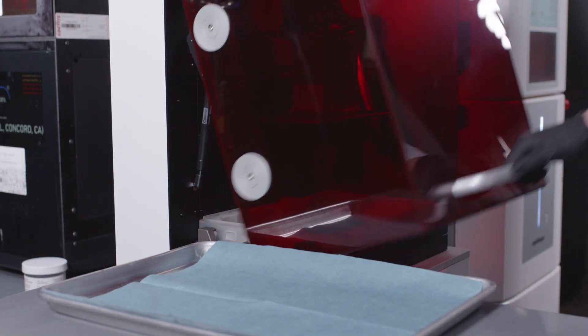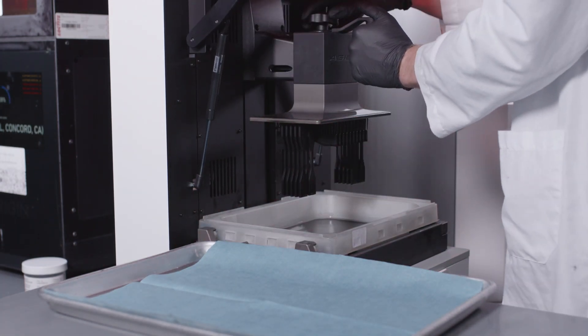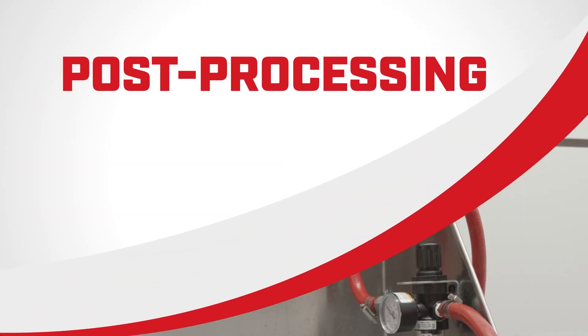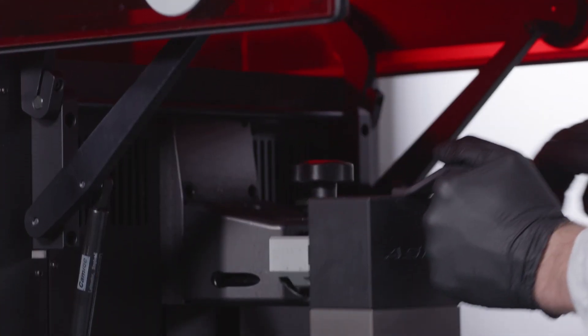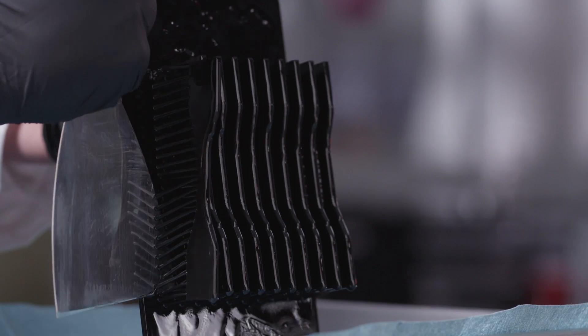After the print is complete, you will begin the post-processing phase to achieve the specified properties on the technical data sheet. Once your part has been removed from the build platform and support structures have been removed, the part should then be washed.